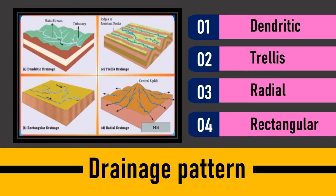In the dendritic pattern, it consists of a single main stream and the tributaries resemble the branches of a tree. Looking at the first diagram, the white-shaded portion shows the river and it looks like branches of a tree. A river which creates a formation like branches of a tree is called the dendritic pattern.